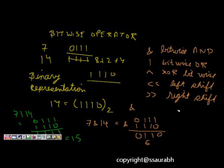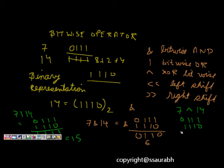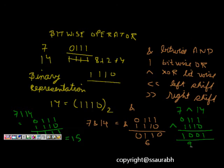Now let's see the XOR operation: 7 XOR 14. We have 0111 and 1110. Performing XOR gives us 1001, which is 8 + 1 = 9. So 7 ^ 14 = 9. We've now seen the bitwise AND, OR, and XOR operations on numbers.